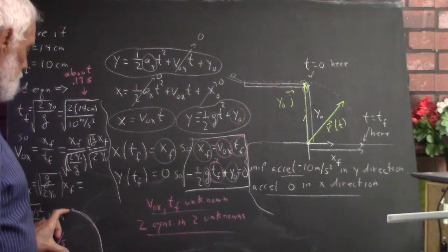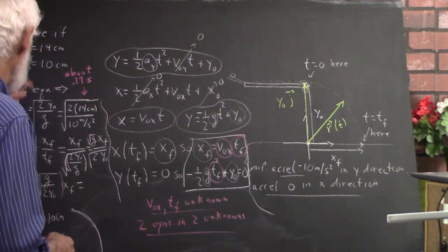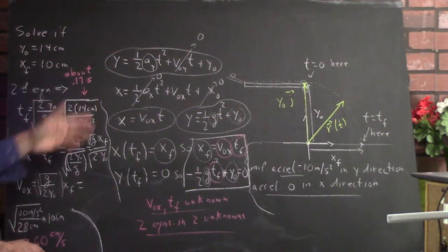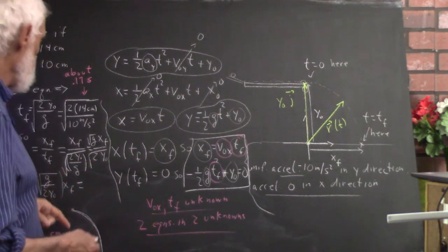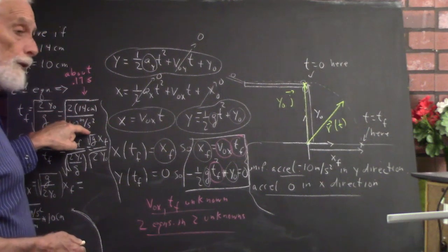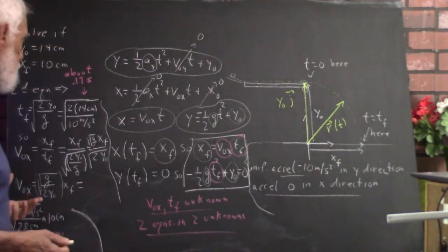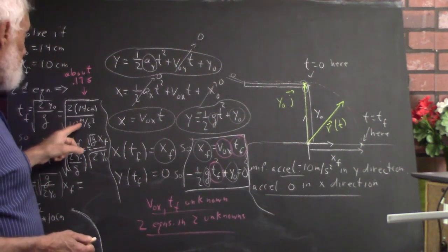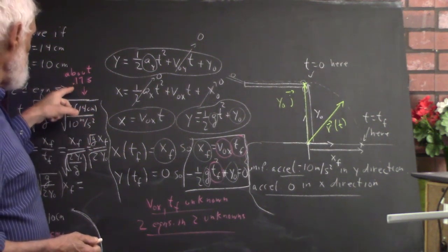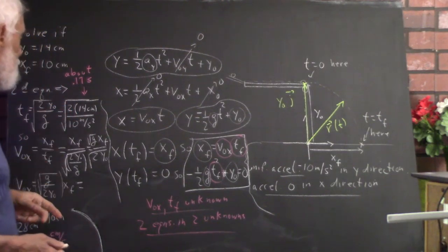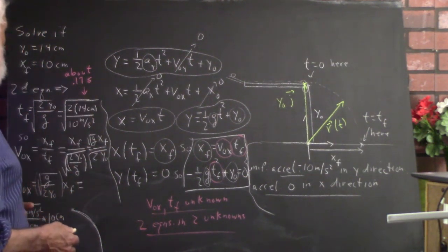We measure and find that this height is about 14 centimeters — that's our y-naught — and this distance is about 10 centimeters — that's our x-sub-f. The second equation implies this result. We plug the numbers in, and we've got to be careful about units: here we have centimeters and here we have meters per second squared. We have centimeters and meters, which are perfectly compatible but not identical units, so we must express them consistently. This comes out to about 0.17 seconds.